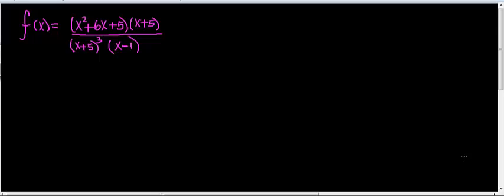Here's our last example on vertical asymptotes and holes. For this function, notice that I have a partially factored numerator — a linear term and a quadratic expression. This quadratic expression can be factored further. When looking for vertical asymptotes and holes, we work with the denominator, but first remember we rewrite and factor the expression completely before we start anything else.